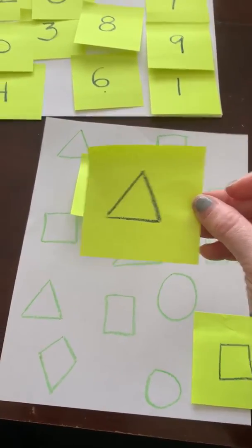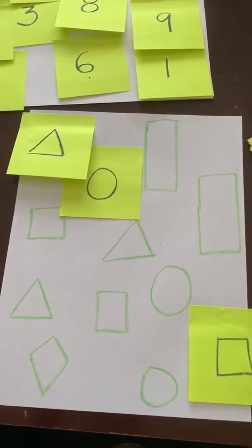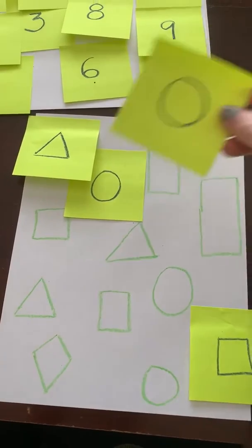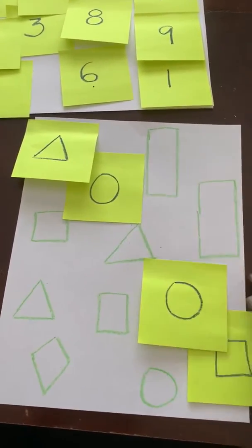What's that? Triangle. We're going to put that triangle right up there. What do we have next? Another circle. Put that right down there.